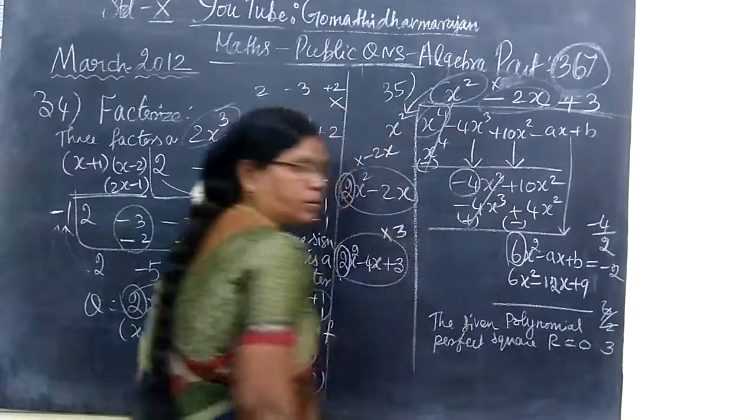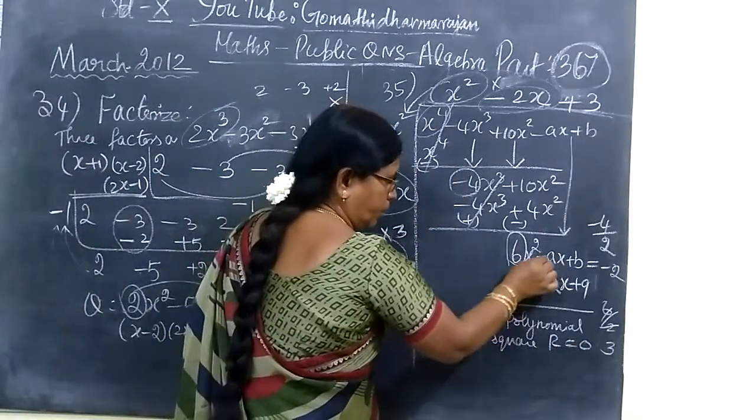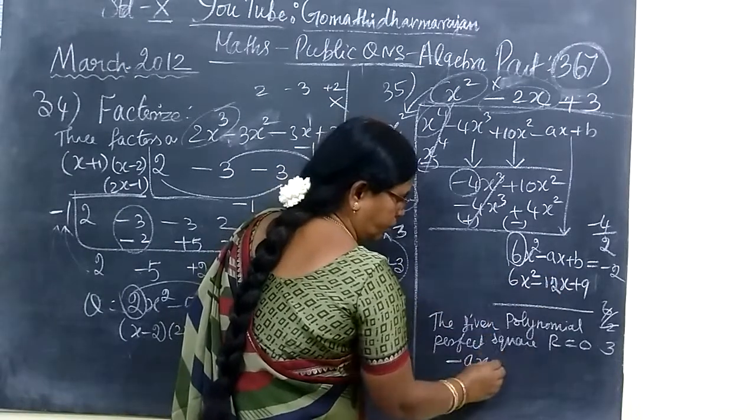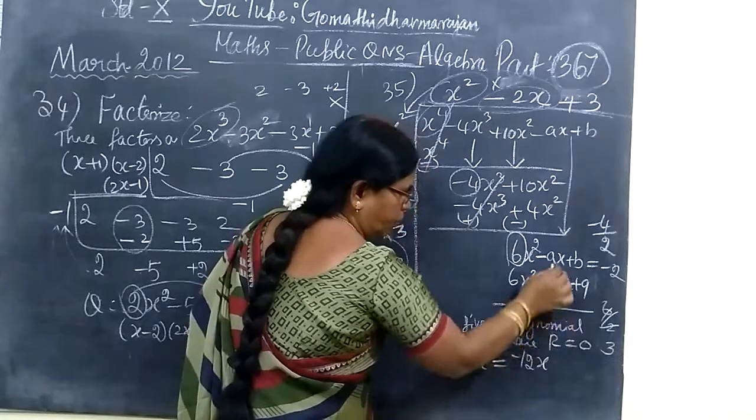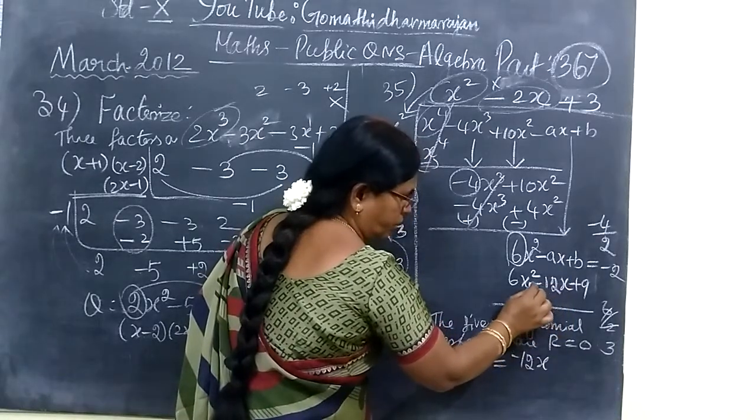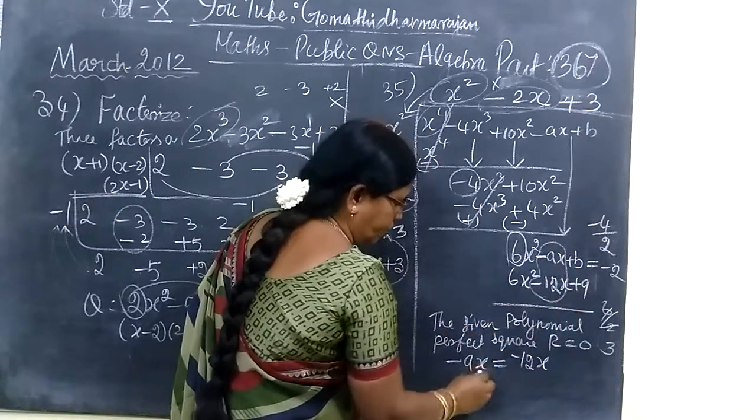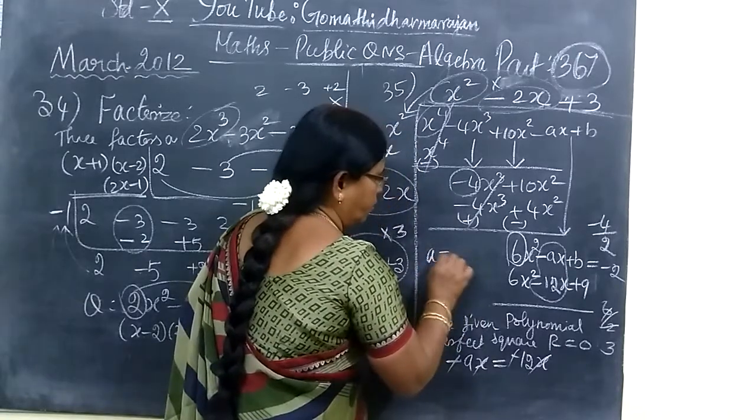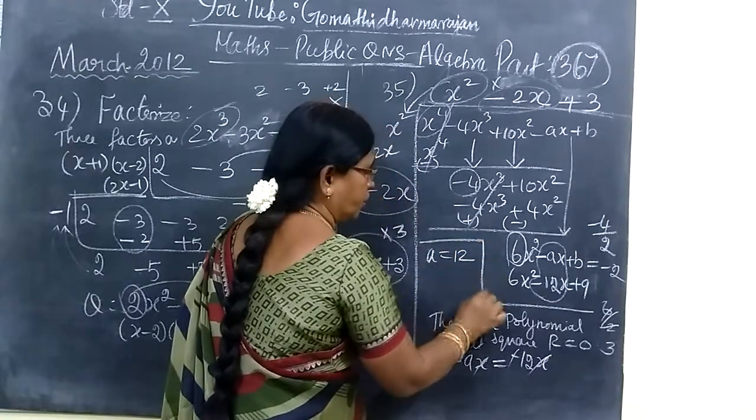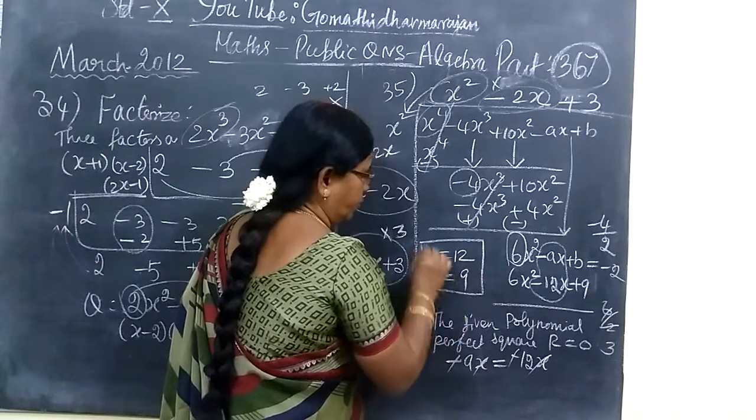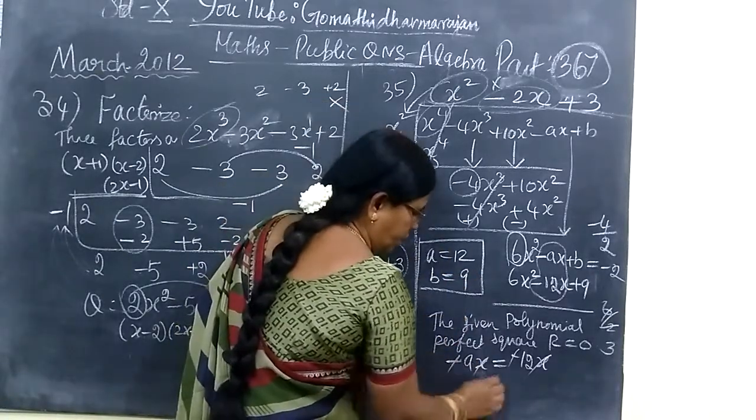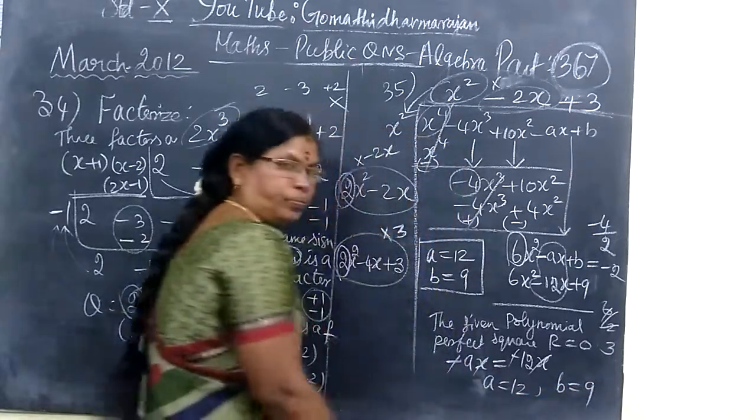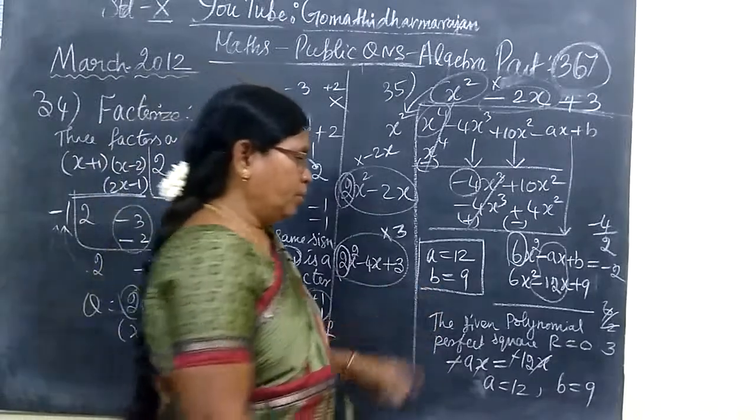So minus 12x is equal to minus Ax. Minus minus cancel, x x cancel. Therefore A value equal to 12. Similarly B value equal to 9.